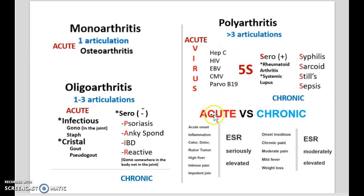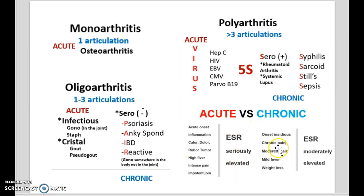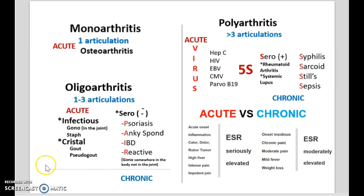The difference between acute and chronic: acute is onset inflammation — calor, dolor, rubor, tumor — high fever, intense pain, impotent joints, and the ESR is seriously elevated. Chronic is onset insidious, chronic pain, moderate pain, mild fever, weight loss, and the ESR is moderately elevated.